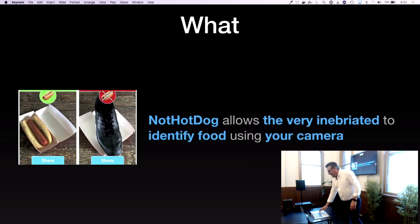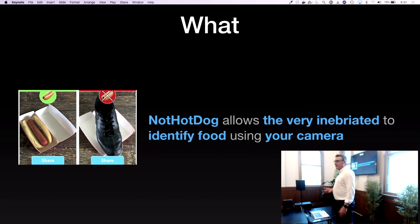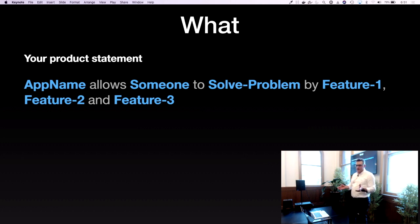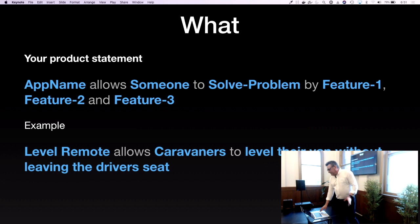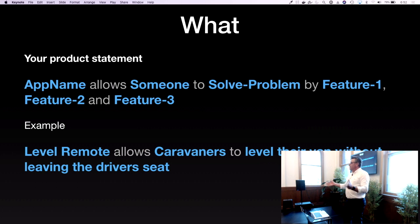The 'what' is really about thinking about what you want to show in your App Store videos. Everyone knows about the Hot Dog app — it has a product statement. My embellished version: it helps people who are perhaps a little inebriated to identify food with a camera, just in case you're not sure if you should eat it. The product statement is really key: my app does something for somebody with these features. For example, my app Level Remote helps caravanners level their van without leaving the driver's seat — that's who the audience is, what it does, and why it benefits them.